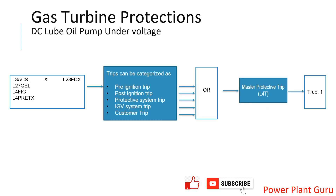The GCV L3ACS is the GCV SRV related command versus feedback error trip, which we covered in the last video. Today's topic — L27QEL — is related to DC LOP, that is EOP. Sometimes people call it EOP only. This is a check where the gas turbine control system checks whether your EOP is available or not before starting the machine.